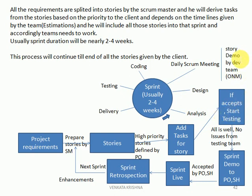Once we accept the story based on the story demo, we start actual testing. We will identify bugs and send them back to the development team; they fix them and send it back to testing. This process continues until all bugs are closed. When everything is working fine, we give the sprint demo to the product owner and stakeholders. Once they accept it, the code goes live — to production. One release may have multiple sprints; for example, one release with three sprints must complete sprint one, two, and three before everything is combined and pushed to the live environment.